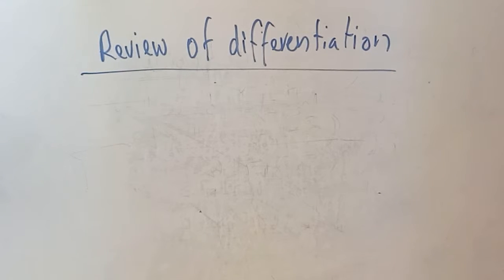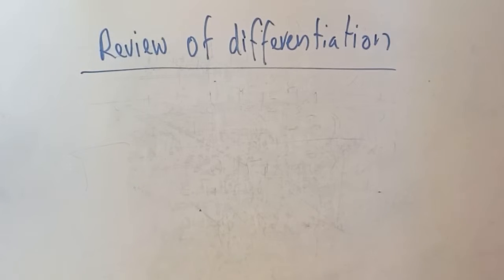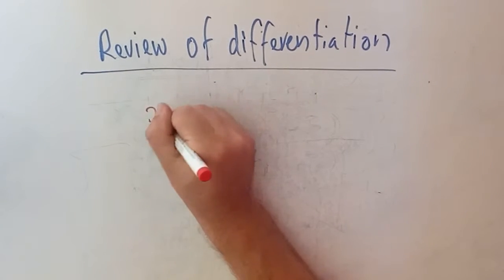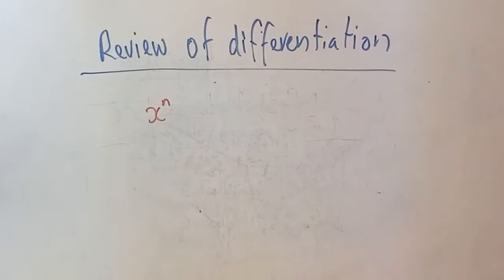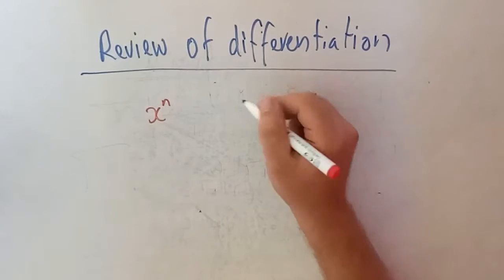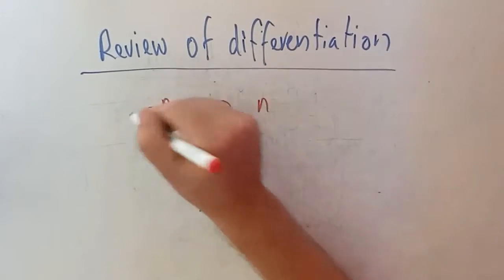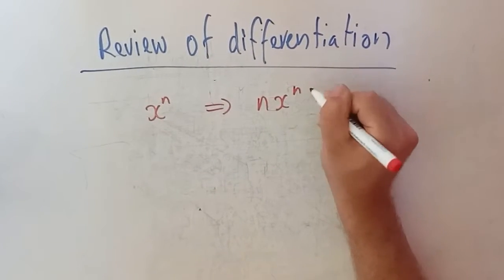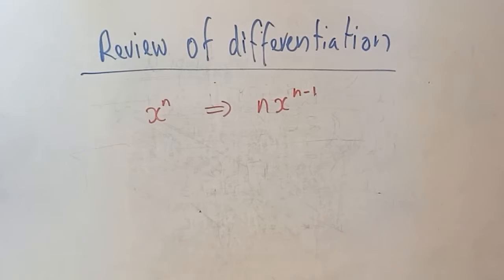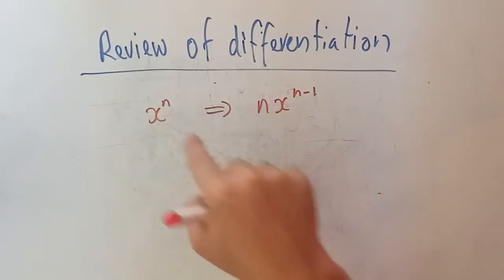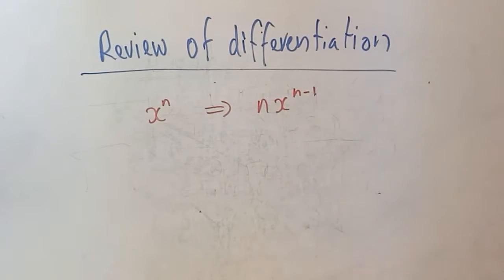Today we're going to do a quick review of differentiation. We're going to start with the basic rules. If we have a function x to the power of n, when we differentiate that, the n comes down the front as a coefficient, and we take one away from the power. So for any n, we can differentiate like this.